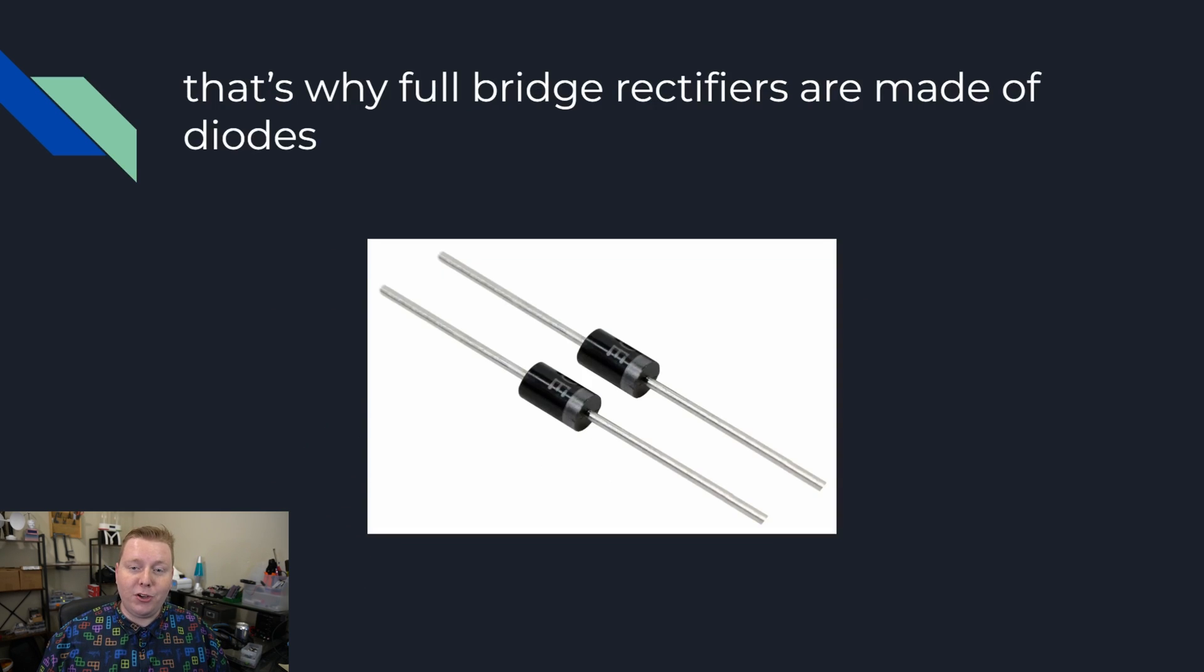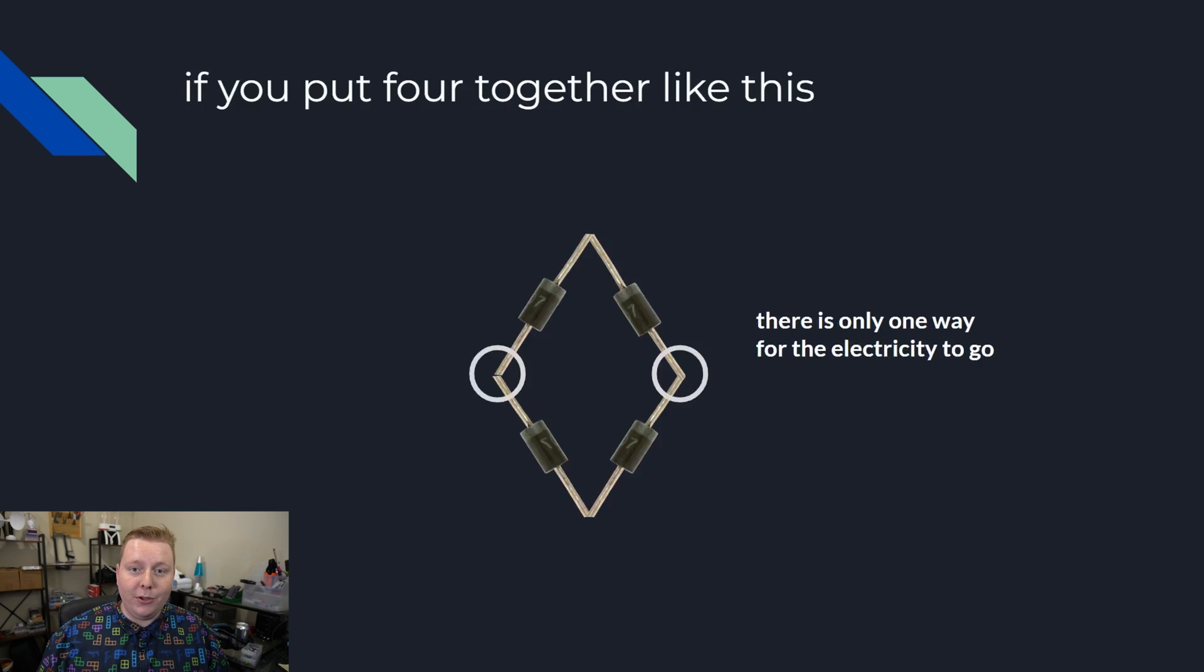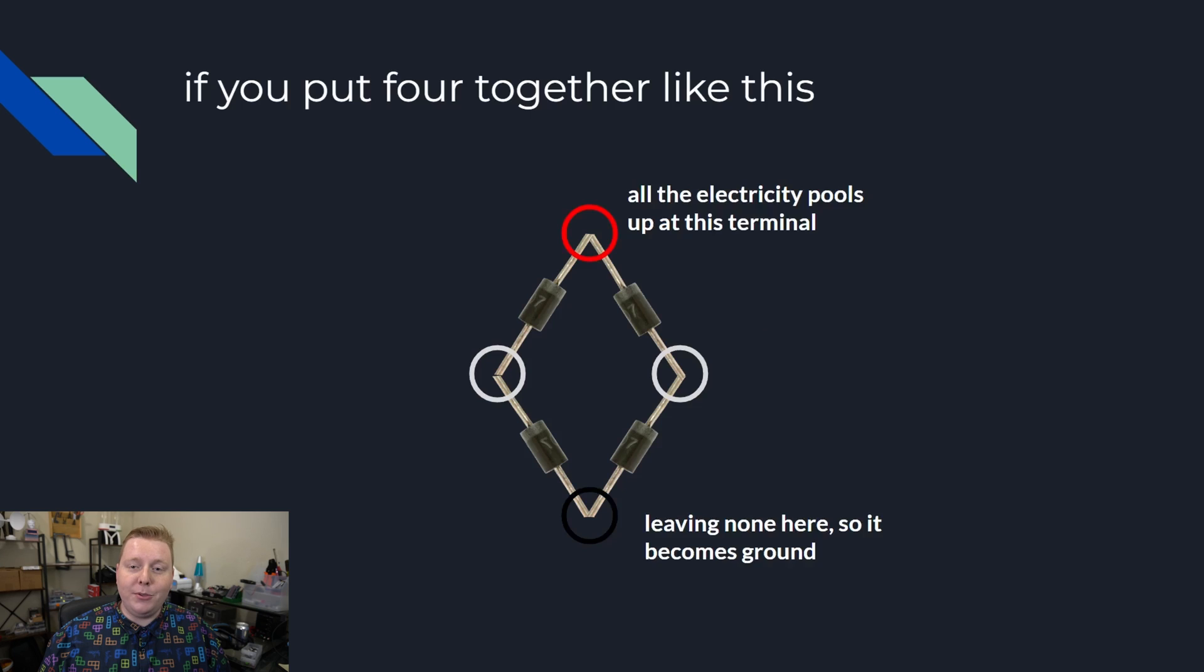This is why full bridge rectifiers are made out of diodes because if you take four of them and put them together like this, then you can put any voltage on these two terminals. All the electrons will have to be forced upwards because they can't go against the diodes. So all the electricity pulls up at the top and there's none at the bottom. So that becomes your power and your ground.